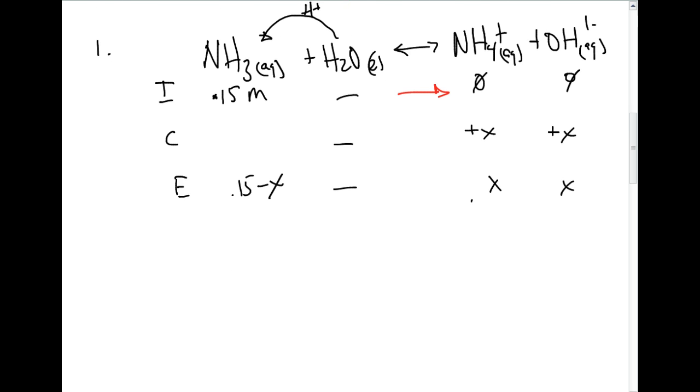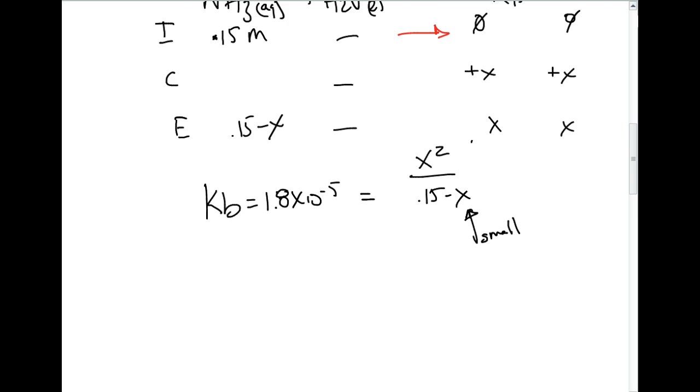Let's write the KB expression. KB equals 1.8 times 10 to the negative 5th, which equals our products from the equilibrium line. It's going to be x times x, which is x squared over 0.15 minus x. Hopefully you can recognize from this type of setup that we can make an assumption here, and the assumption is that x is going to be so small that we can just ignore it, and we'll double check to make sure that's less than 5% below, otherwise we need to use the quadratic formula.